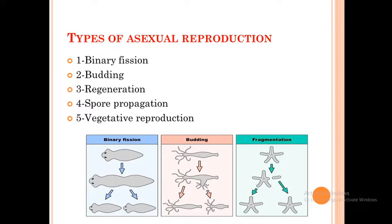If the number of chromosomes in the parent cell is 2n, the number of chromosomes in the offspring will also be 2n. Asexual reproduction needs no special systems or structures to occur because it takes place by mitosis division. The types of asexual reproduction are: binary fission, budding, regeneration, spore propagation, and vegetative reproduction.